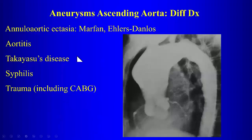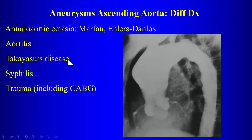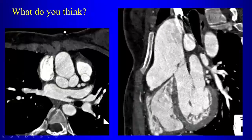The differential for aneurysms of the ascending aorta includes annuloaortic ectasia from Marfan's or Ehlers-Danlos, aortitis or vasculitis such as Takayasu's disease, syphilis — which we don't see much anymore — and trauma including prior surgery, which can result in an aneurysm or pseudoaneurysm of the ascending aorta.